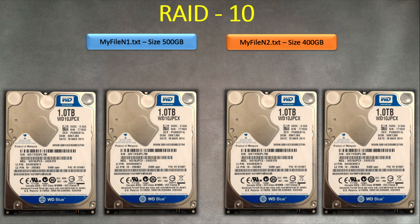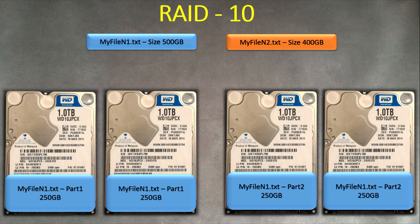Let's look at how files are written to the disk. We have two files here — let's write the first one. As you can see, 50% of the first file is written to one hard drive, and the second hard drive does mirroring — that's RAID level 1, just mirroring. On the other pair of disks, it writes the second part of the file and mirrors that second part as well.